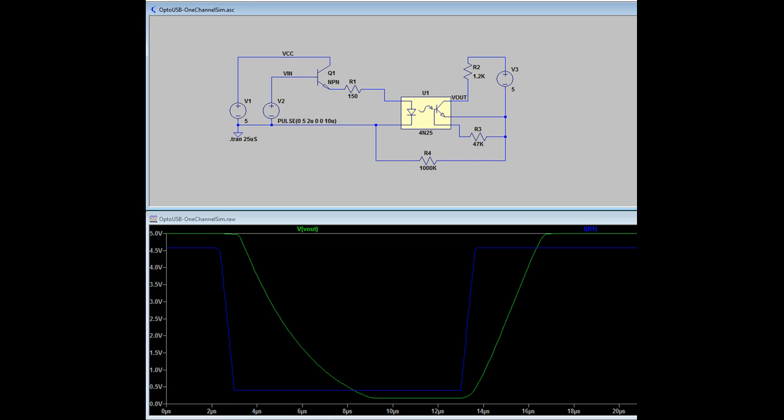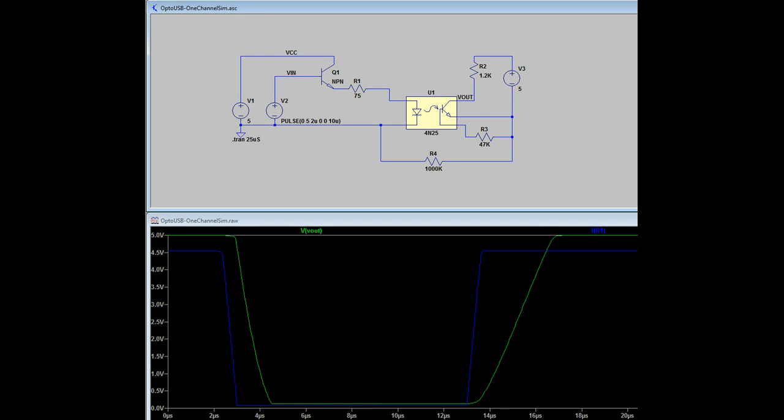So what happens to the output if we drop the series resistor out of the transistor into the LED? You can see we get a very nice speed up on the front edge when we do that.